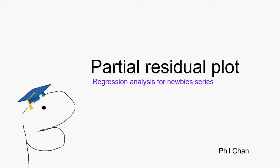In the previous video, we looked at the added variable plot that's used to find influential cases in multiple linear regression. Now we're going to look at the partial residual plot, another useful plot in multiple linear regression.